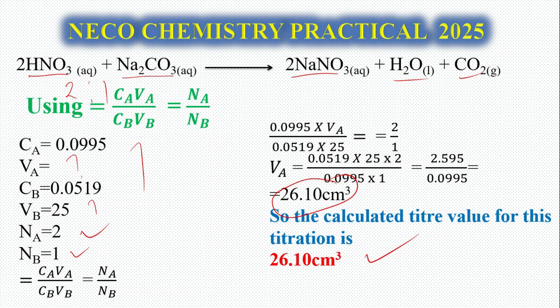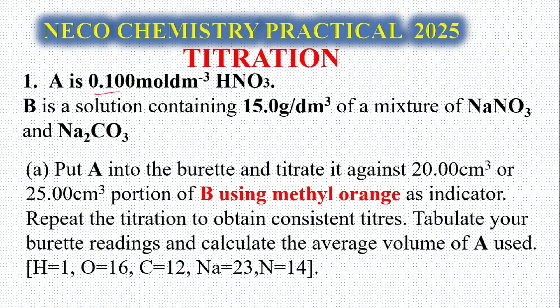Tutors, please take note. Students, tutors, let's look at expected questions on Monday. Question number 1: A is 0.100 mol per dm³ of HNO3, that's our acid. B is a solution containing 15 grams per dm³ of a mixture of NaNO3 and Na2CO3. Put A into the burette and titrate it against 25 cm³ of B. We are using methyl orange as an indicator. Repeat the titration to obtain consistent titre values. Tabulate your burette readings and calculate the average volume of A used.